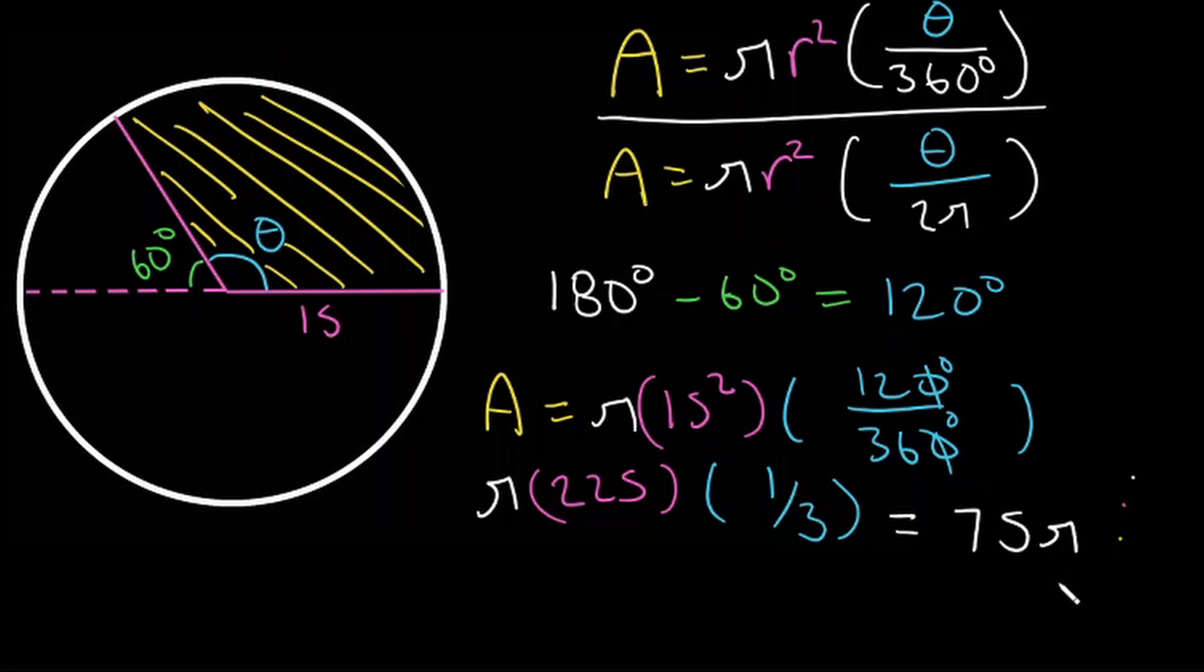So what is 75 times pi? 75 times pi is 235.619 so let's round that, it would be 235.62 and that's our final answer. The area of this sector here is 235.62.